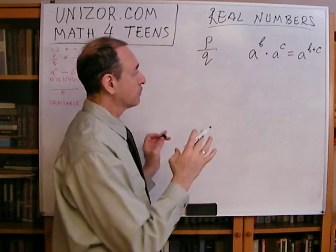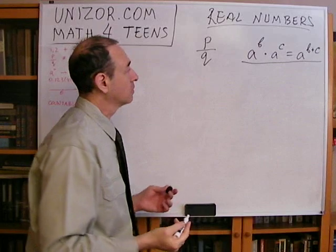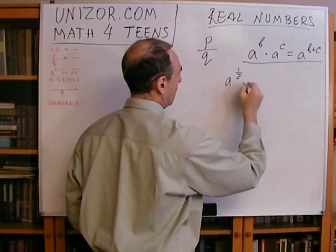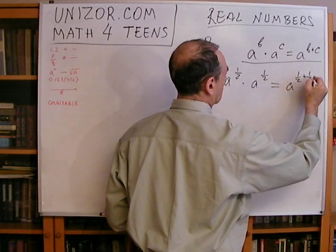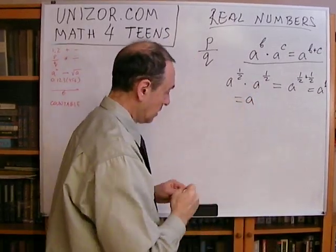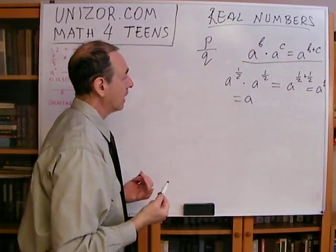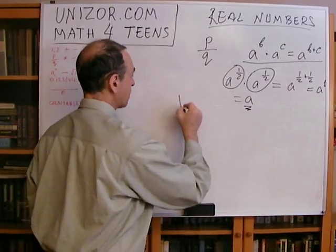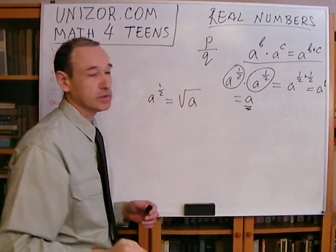We found this property from integer powers, but we would like it to always be true. For instance, what if instead of a natural number exponent, I use one half? I would like the property a to the one half times a to the one half equals a to the first, which means a. So a to the one half, when multiplied by itself, gives a. We know this operation in algebra — it's the square root. So a to the power of one half is the square root of a.